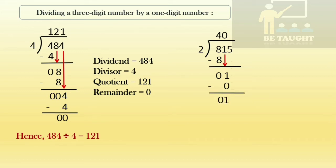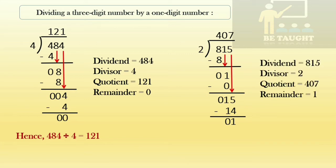We bring the five down using an arrow, giving us 15. Fifteen will go how many times in the two times table? We take a number less than 15 — two sevens are 14. Five minus four is 1 and one minus one is 0. In this sum we have a remainder of 1. Final answer: dividend = 815, divisor = 2, quotient = 407, remainder = 1.